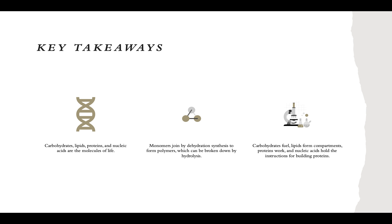We've reached the end of this slideshow. Our key takeaways are: carbohydrates, lipids, proteins, and nucleic acids are the four molecules of life. Monomers join by dehydration synthesis to form polymers, which can be broken down by hydrolysis — they are opposites of one another. Finally, carbohydrates fuel the body, lipids form compartments, proteins do the work, and nucleic acids hold the instructions for building proteins.